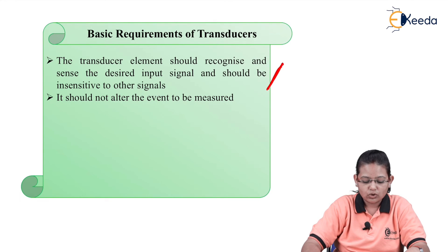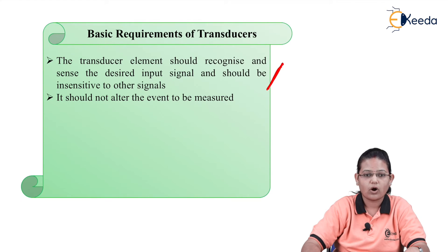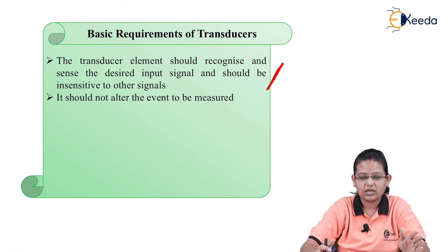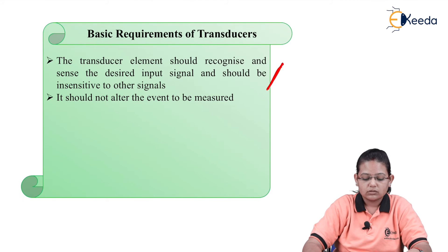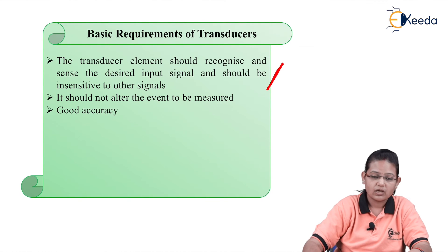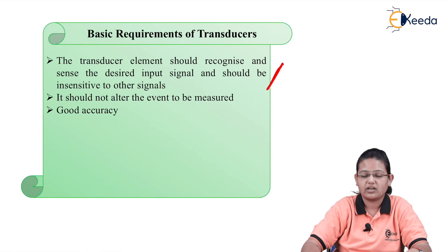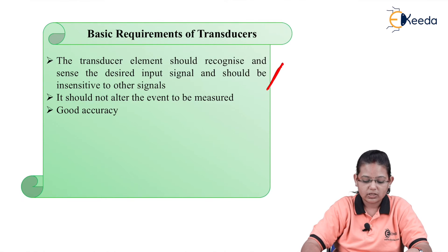The second requirement is that the transducer should not alter the event to be measured — whether it is a physical quantity like pressure, flow, or temperature. The third requirement is accuracy. Whatever change we have to measure should be accurate, so the transducer should have good accuracy.